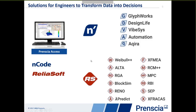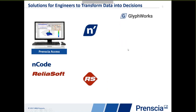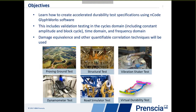Within HBM Princea, we have two main software brands: Reliasoft, which contains tools for any kind of software analysis for reliability, and Encode, which allows us to do durability analysis. For today's topic, we're going to focus on the Glyphworks product inside of the Encode brand. Our objectives are to learn how to create accelerated durability test specifications using Encode Glyphworks software, and I'll give you some live demonstrations in the software.